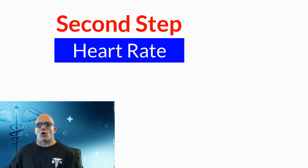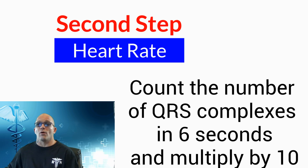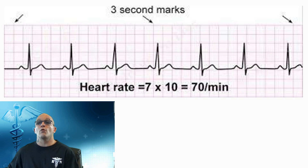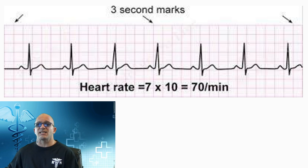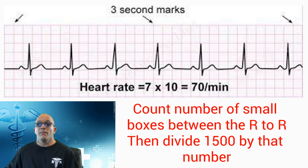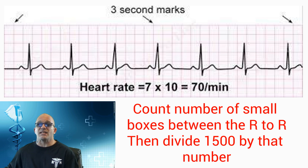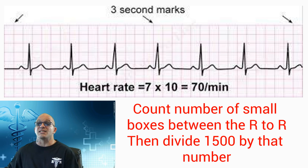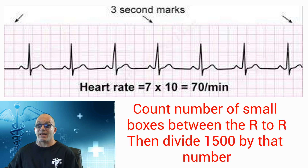The second assessment is the heart rate. This can be measured by counting the number of QRS complexes that occur over a 6-second interval and then multiplying that number by 10. For example, if you have 7 QRS complexes present in a 6-second strip, you take the 7 and multiply by 10 to give you a rate of about 70 beats per minute. It can also be measured by counting the number of small boxes between the R to R interval and then dividing this number into 1500. The second method will give you a more accurate rate.